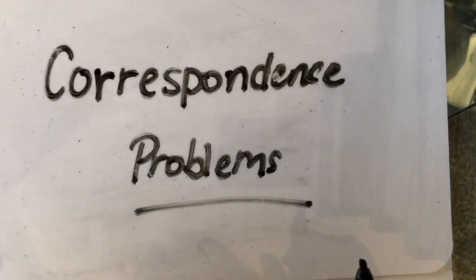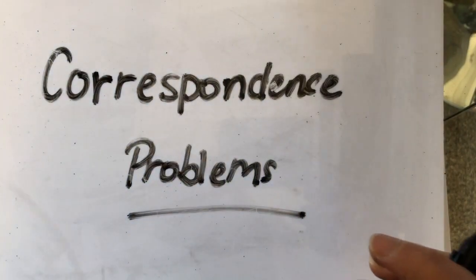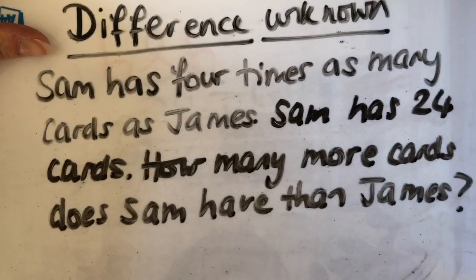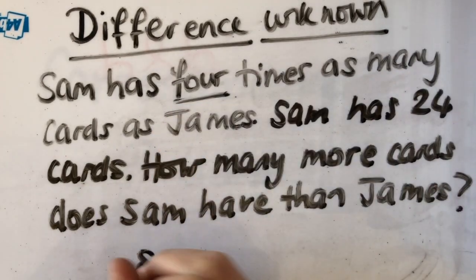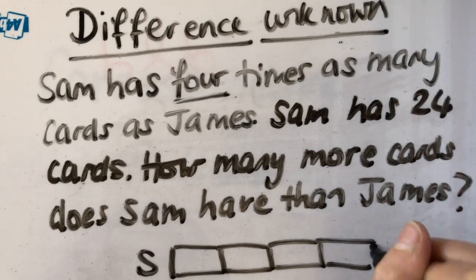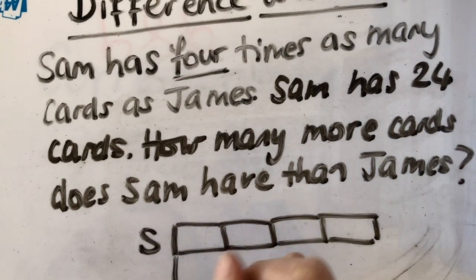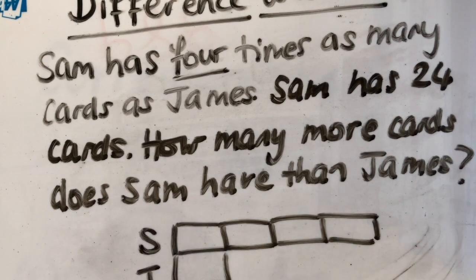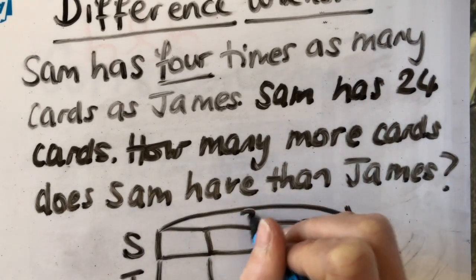Moving on to the next one. Now this one is when my difference is unknown. So with this one I know what my larger value is. So Sam has 4 times. There's Sam. 1, 2, 3, 4. 4 times as many cards as James. James just has... so he's got 4 times as many. Sam has 24 altogether, so this makes 24.